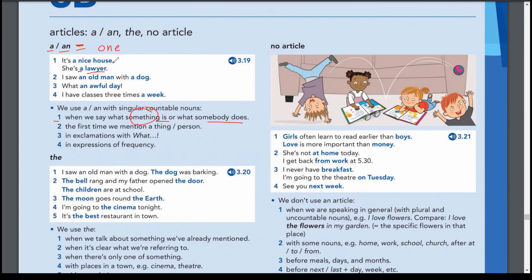The second point: we use 'a' or 'an' the first time we mention a thing or a person. For example, 'I saw an old man with a dog.' This is the first time I'm talking about an old man, so I say 'an old man' and 'a dog.' We use 'an' before a vowel sound — for example, 'an old man' because 'old' starts with a vowel.